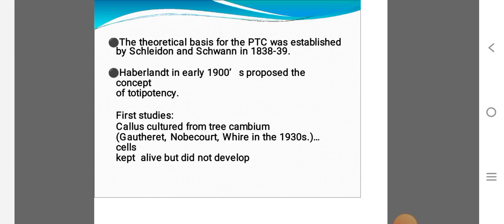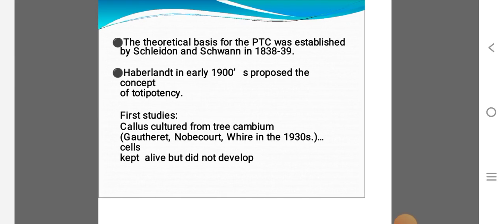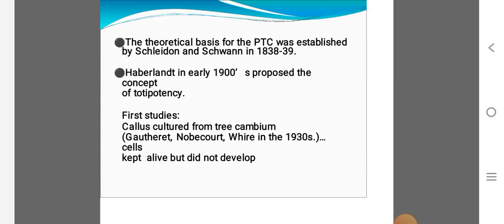In the year 1838 and 1839, after development of cell theory, either prokaryotic cell, eukaryotic cell or microbial cell or plant cell, then development is going on. In the year 1900, Haberlandt, he is the origin of plant tissue culture, proposed the concept of totipotency.